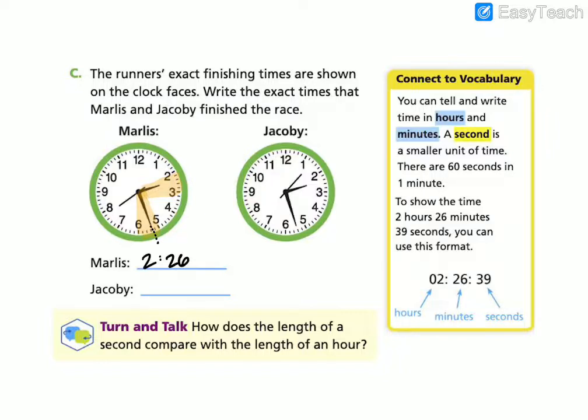So now we look at the second hand. So our second hand is almost to the eight, meaning it's almost to 40 seconds. If I extend it out, it is just one before, so that means it's at 39 seconds. When we write with seconds, we actually just add another colon, and we add our seconds onto the end. So it shows that Marlise finished at 2:26 and 39 seconds.